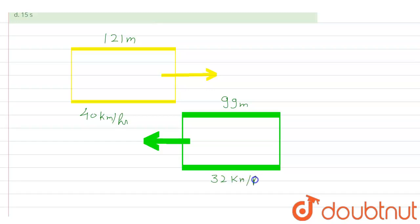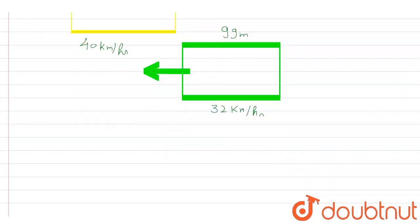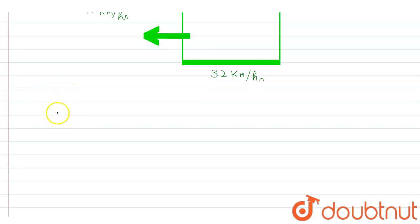If you want to calculate the time, time will be equal to displacement upon relative speed. So here, time equals displacement upon relative speed. If you see that this one is moving in the forward direction and this one is moving in the backward direction...